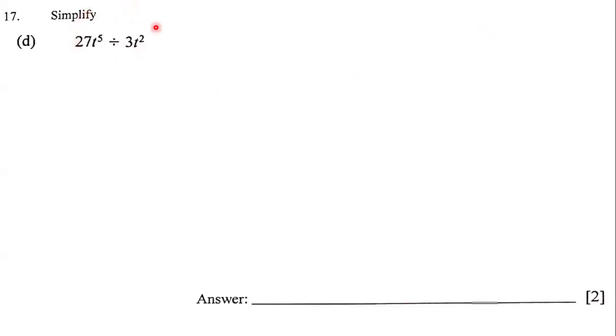Here, our goal is to simplify this algebraic expression. Notice that we have 27t to the fifth power divided by 3t to the second power.